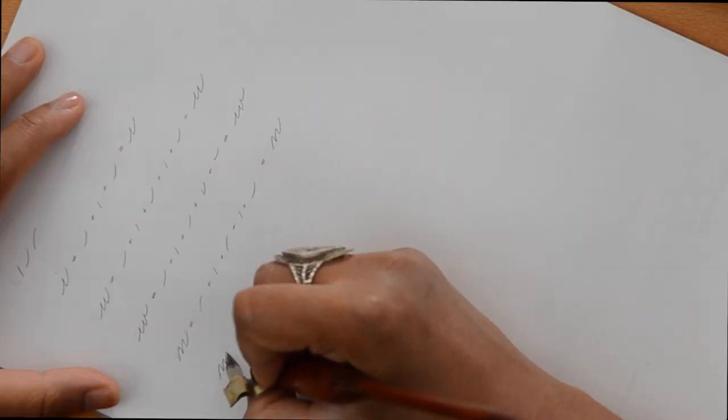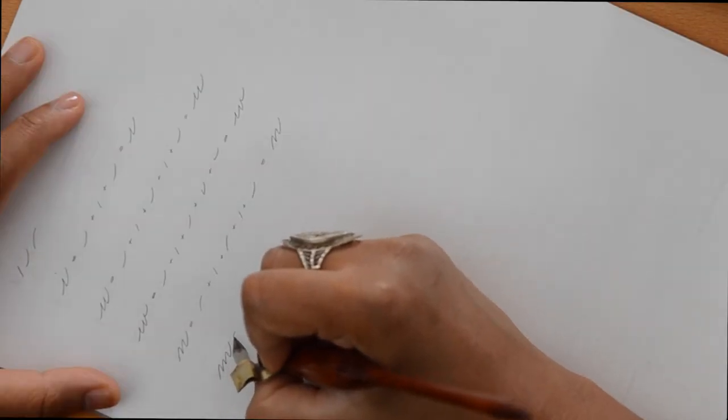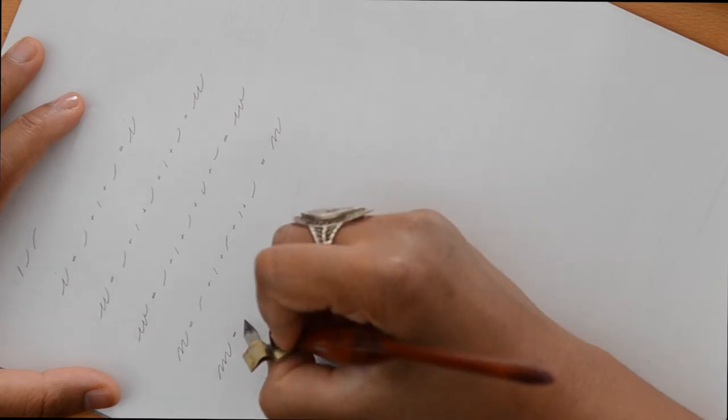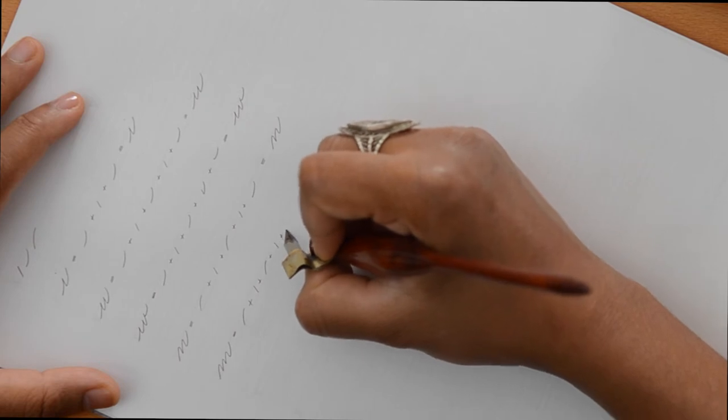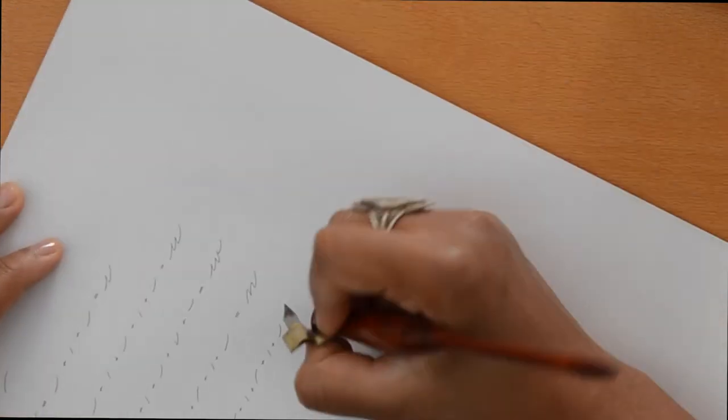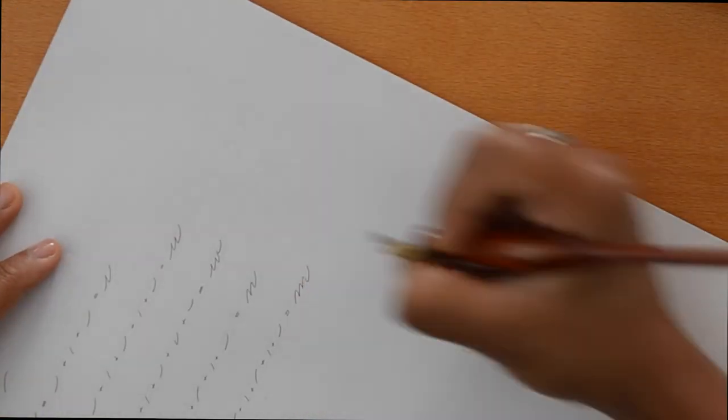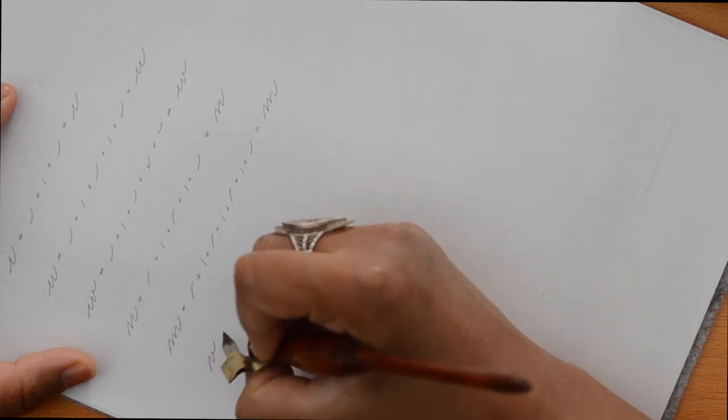When you're making the M make sure the two parts of it look the same. Each of the humps is composed of the same strokes so they should look the same. The V ends with a tail just like the W.